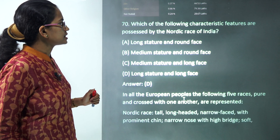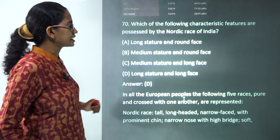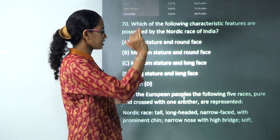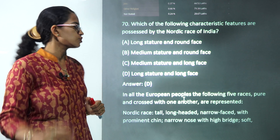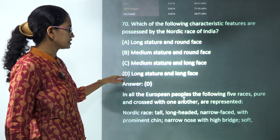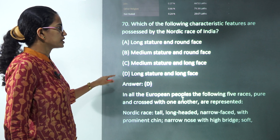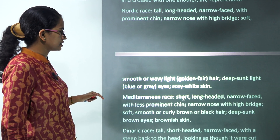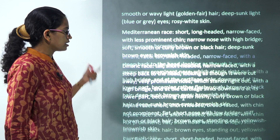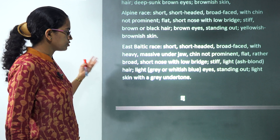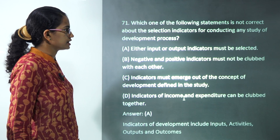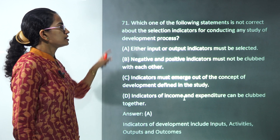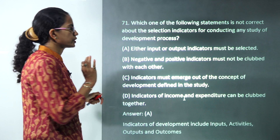The next question covers the Nordic race. Nordic people have a long face and tall stature, so 'long face and long stature' is the correct answer. These are basically a European breed.